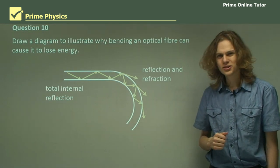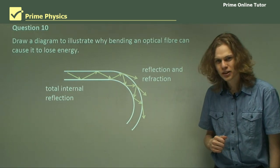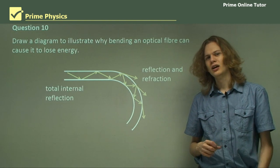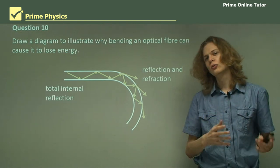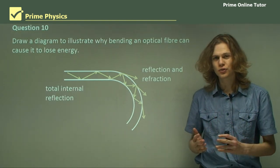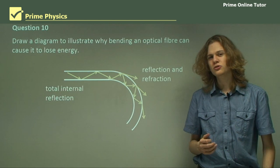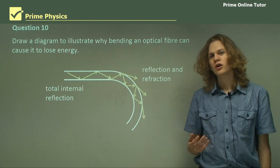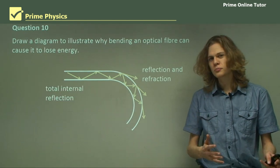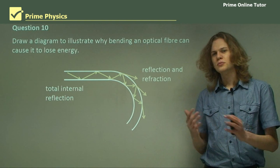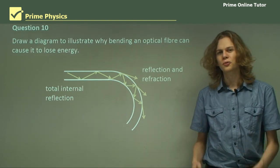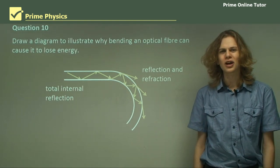Well, that's the end of the questions. So in this section, we've covered how total internal reflection is useful to us — we can use it in optical fibers. Optical fibers are used for endoscopes and transmission of data, which are both quite useful in our world today.